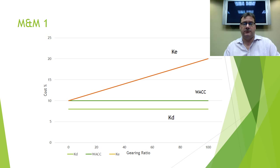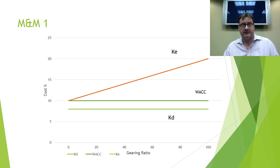The conclusion of Modigliani and Miller Proposition I is that capital structure is irrelevant because your cost of capital will stay the same. As gearing rises you have more cheap debt, but the cost of equity rises, and those two things exactly balance each other out. One important assumption here: corporate debt is considered risk-free, which we know in real life is not true.